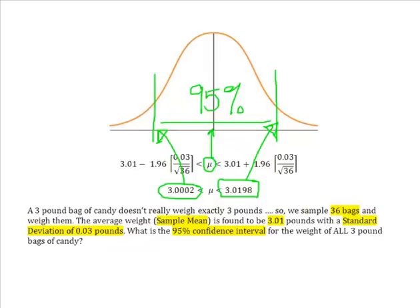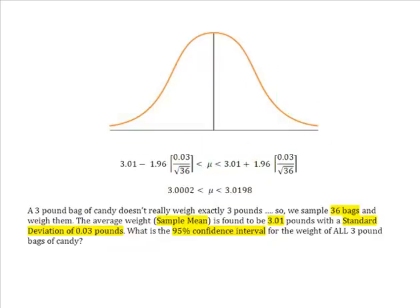And remember, that 5% chance is split between half of my mistakes being on the high side and half of my mistakes being on the low side. So in conclusion, the 95% confidence interval for the weight of all three pound bags of candy is going to be right here.